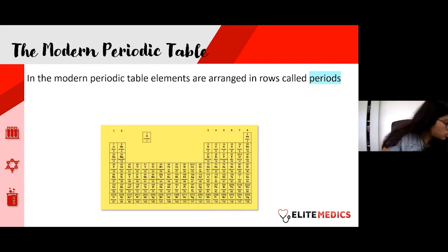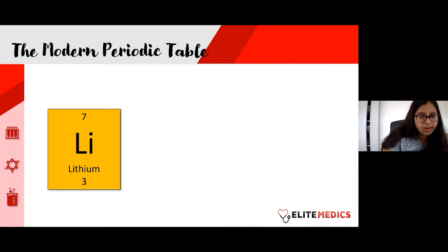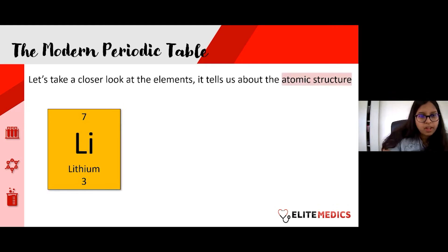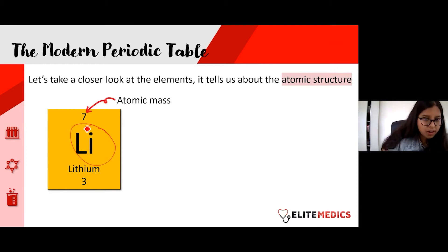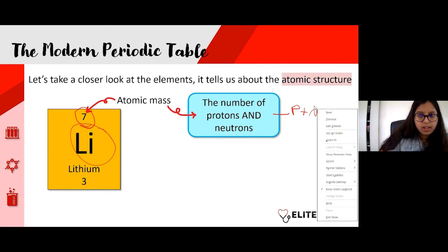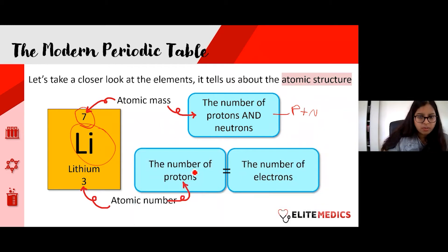Now onto the periodic table — hopefully this is just a recap. Elements are arranged in rows called periods, going across, and going down we have our groups. We sort elements this way to group them based on the number of electrons in their outermost shell and their properties. Let's look at lithium: at the top we have the atomic mass, which is the number of protons plus neutrons.